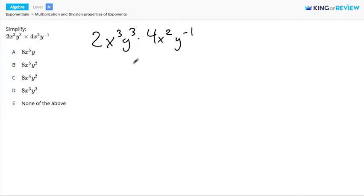To multiply exponential expressions, we have to identify which pieces go together. For example, we have a 2 and a 4. These are coefficients, numbers in front of variables, so they go together. We can multiply them and get 2 times 4, which is 8.